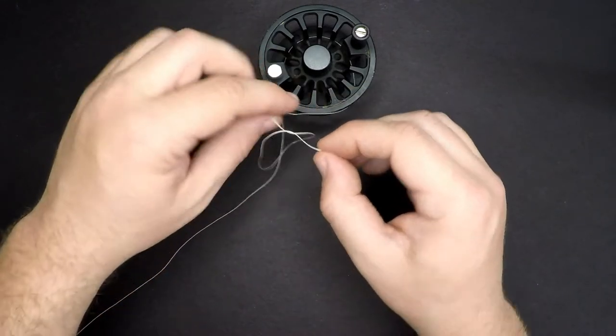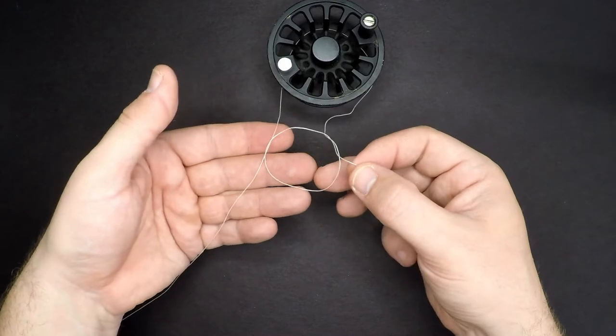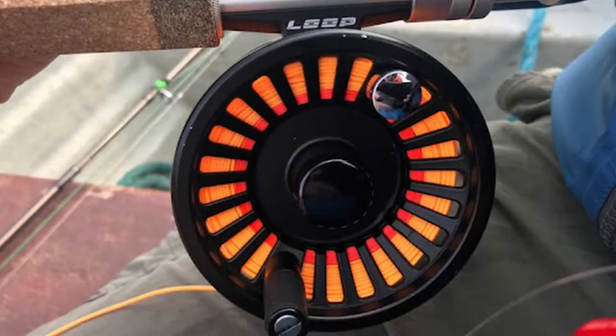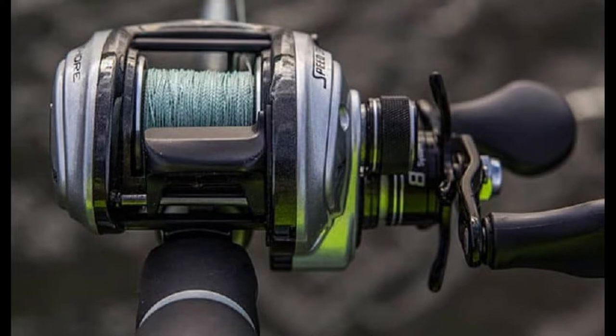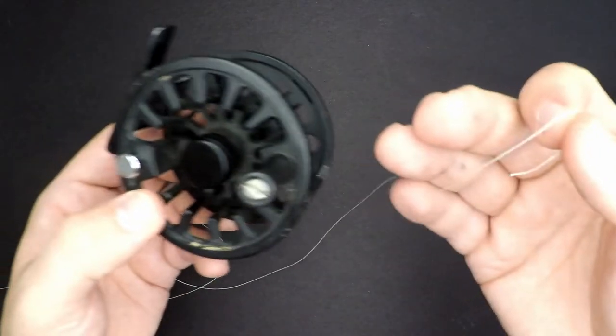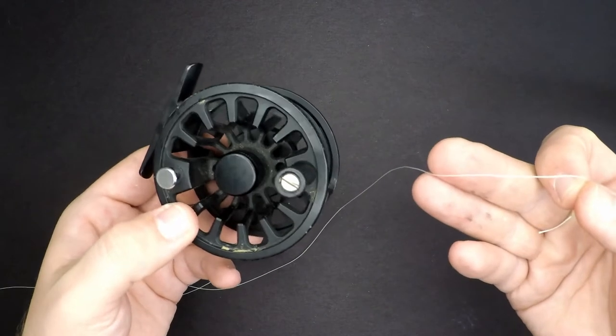Now the arbor knot is a great option if you're going to tie any type of line to any type of reel, whether it's fly line on a fly reel, mono on a spinning reel, or braid on a bait caster. It doesn't matter what the line reel combination is. The arbor knot is a great option to get that done.